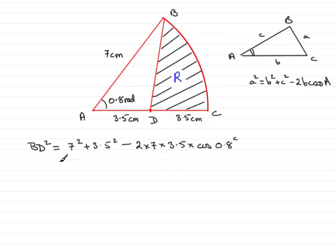If you work that sum out on your calculator, you must remember now, because you're taking the cosine of an angle in radians, you must be in radians mode, so check your calculator first for that. Working this out comes out as 27.111371, and so on.